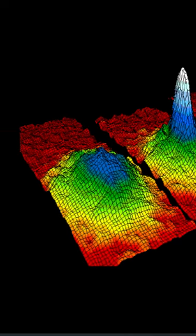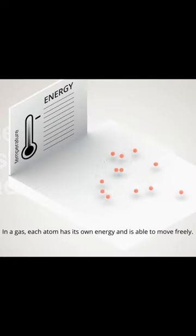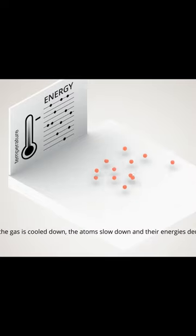This bizarre fifth state of matter, Bose-Einstein condensates, is typically formed when a gas of bosons at very low densities is cooled to temperatures very close to absolute zero. Here's the kicker: this quantum spectacle is taking place right in front of us, at room temperature.